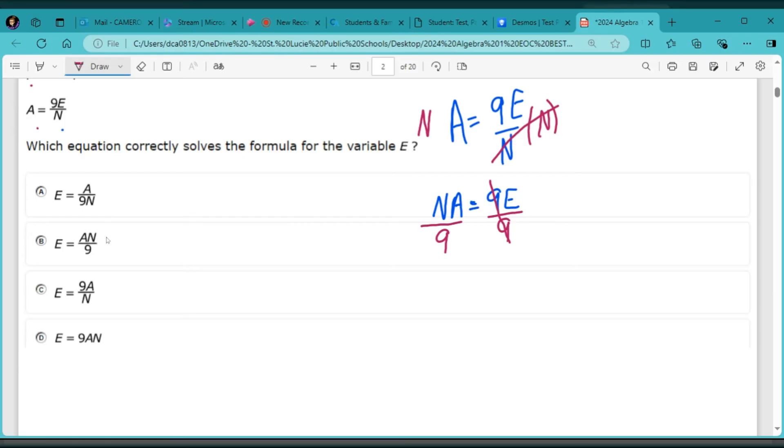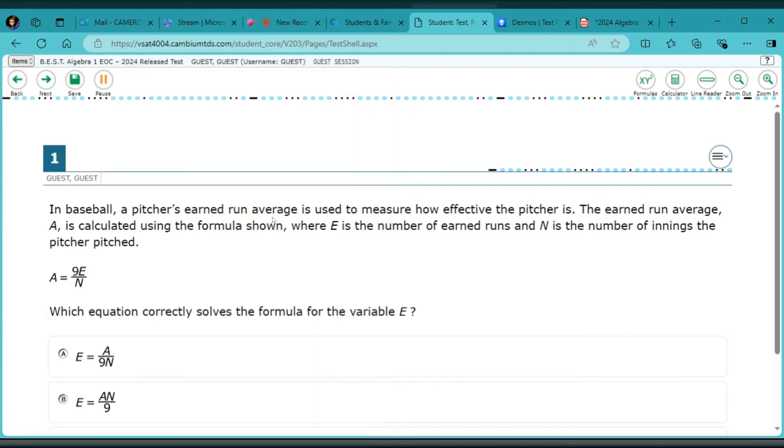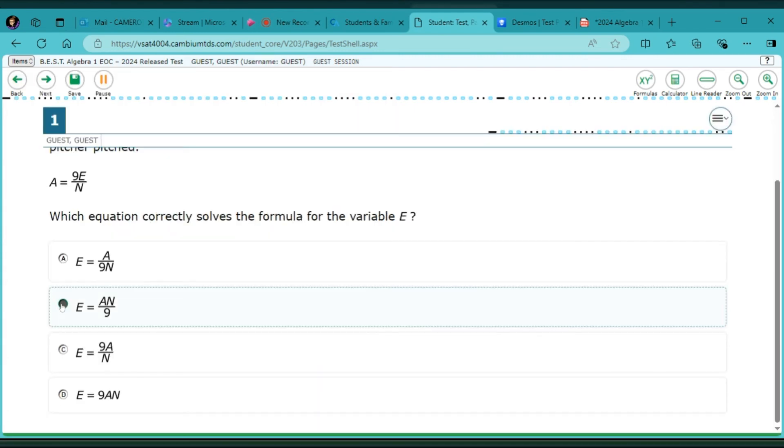Now my E is only by itself on this side. So I know that E equals NA over 9. And my answer that says that E equals NA or AN over 9. I'm allowed to multiply in either order. So they just have the A and N on different sides, but it's equal to my answer. So I know I've got this question right. I can come over here. I didn't need the calculator for that. Lock in my answer and then go on to the next question.